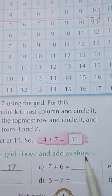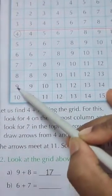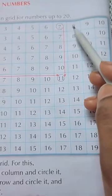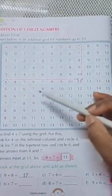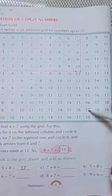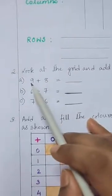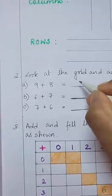Now look at Question 2 in your book, page 4: 'Look at the grid above and add as shown.' Number A is already done for you. 9+8=17. You find 9 in the first column and 8 in the first row, and where they meet the answer is 17.